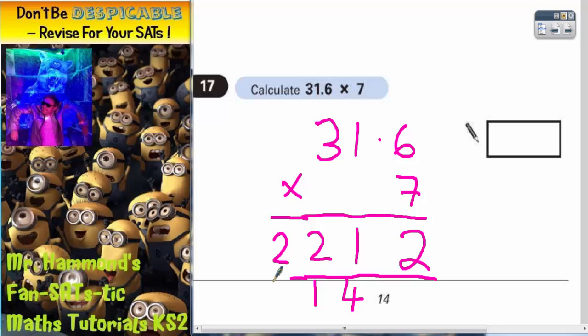So the only thing that's missing is this decimal point. So remember your decimal points need to get lined up. So your decimal point goes there. So your final answer should be 221.2.